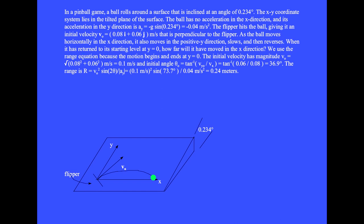When it has returned to its starting level at y equals 0, how far will it have moved in the x direction? We use the range equation because the motion begins and ends at y equals 0. In obtaining the range equation, we already took into account the negative sign in the y component of acceleration. So we have r equals v₀² sin(2θ) divided by the absolute value of a_y. The initial velocity vector has magnitude v₀ equals the square root of 0.08² plus 0.06² equals 0.1 meters per second. The initial angle is θ₀ equals tan inverse v_y0 divided by v_x and we get 36.9 degrees. The calculation of the range gives r equals 0.24 meters.